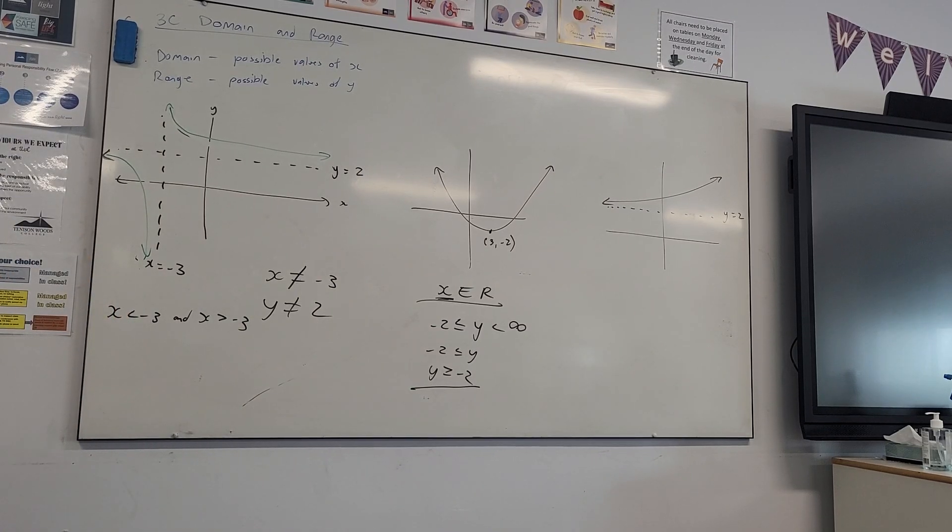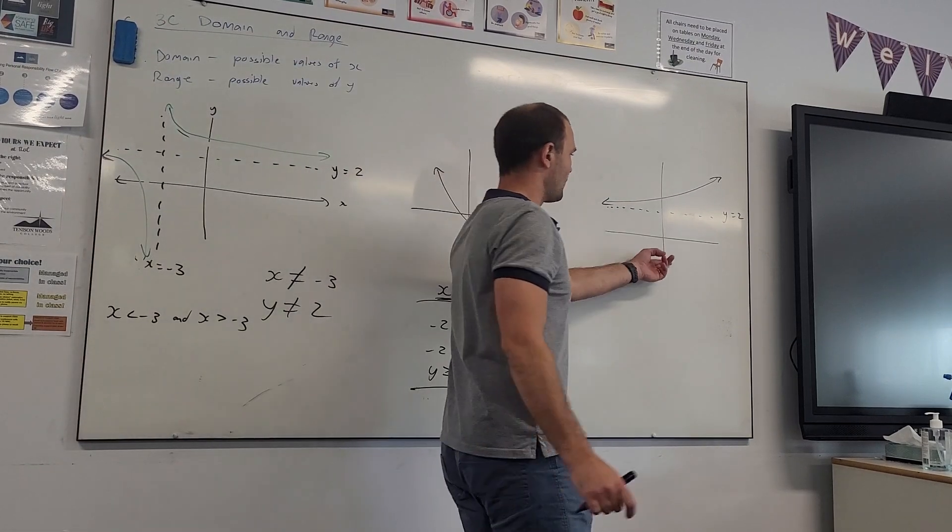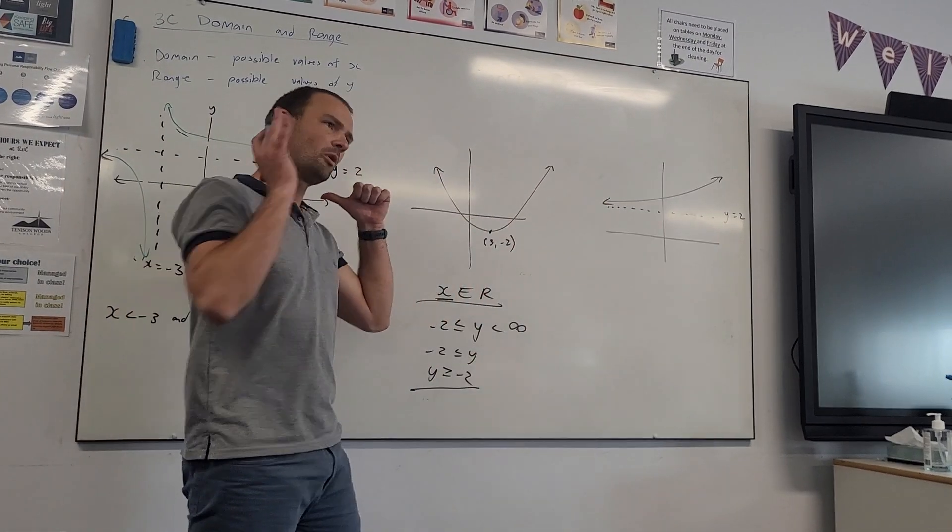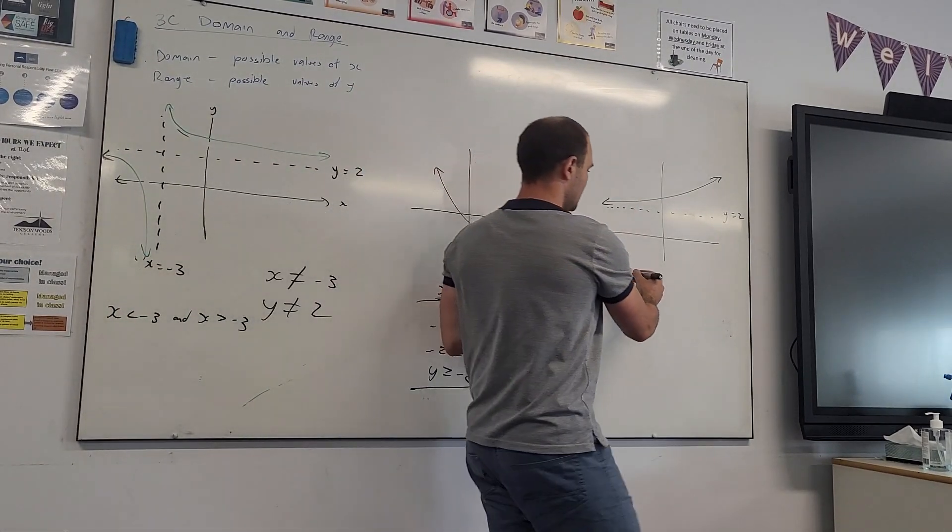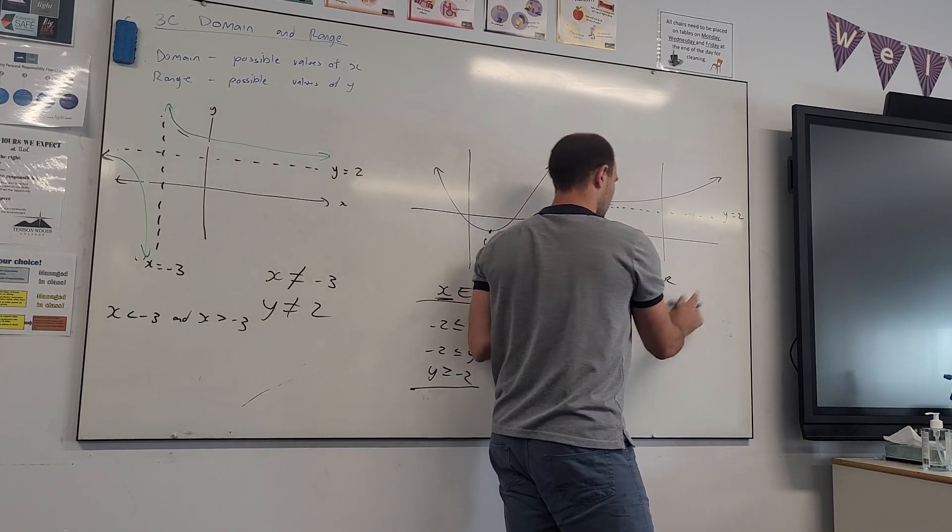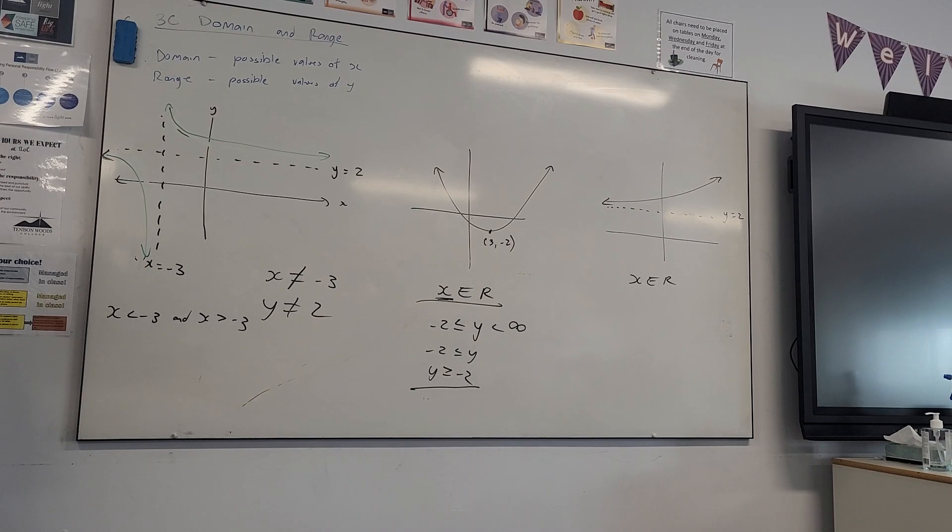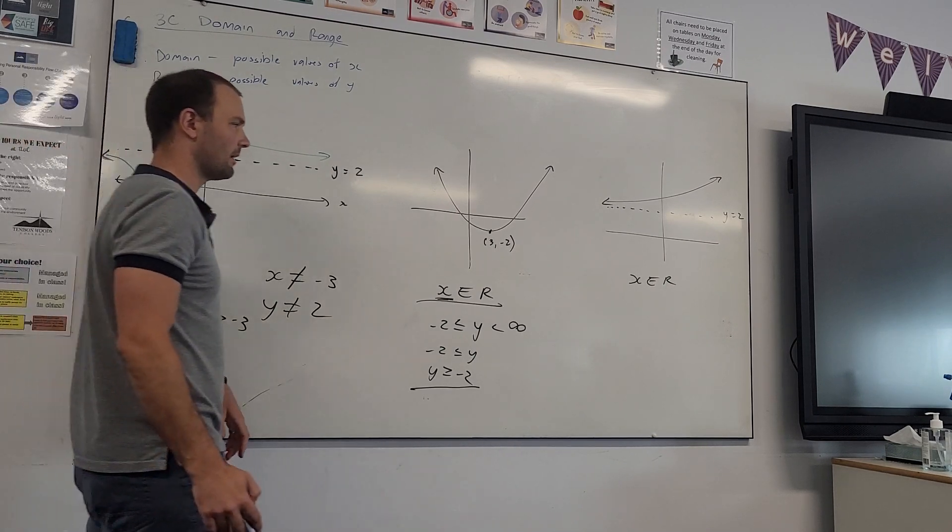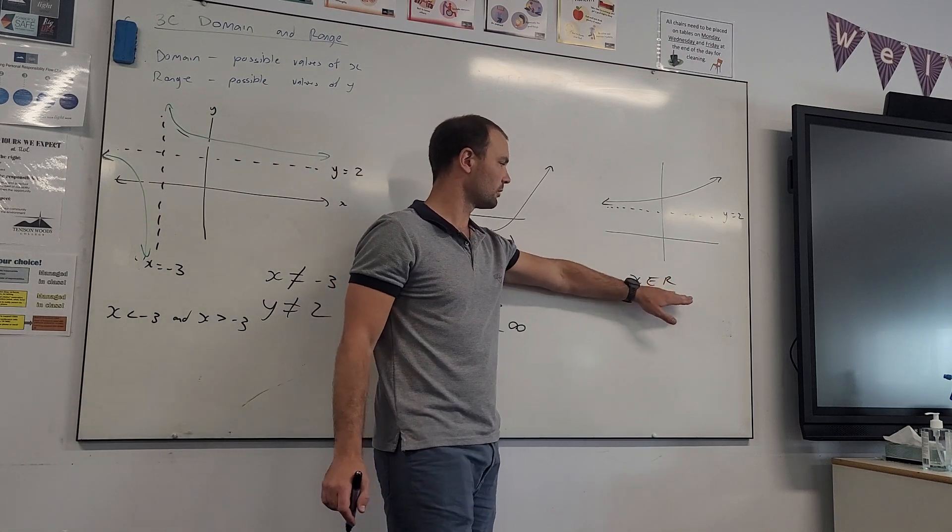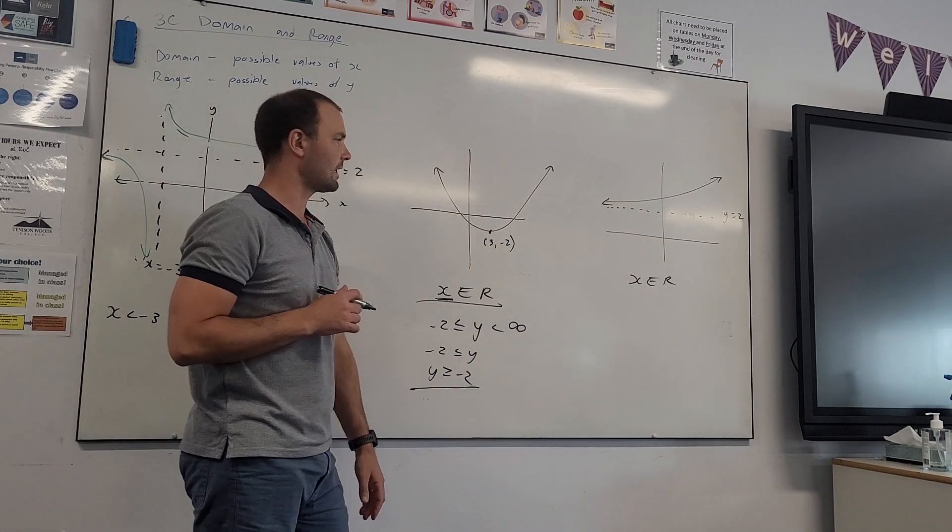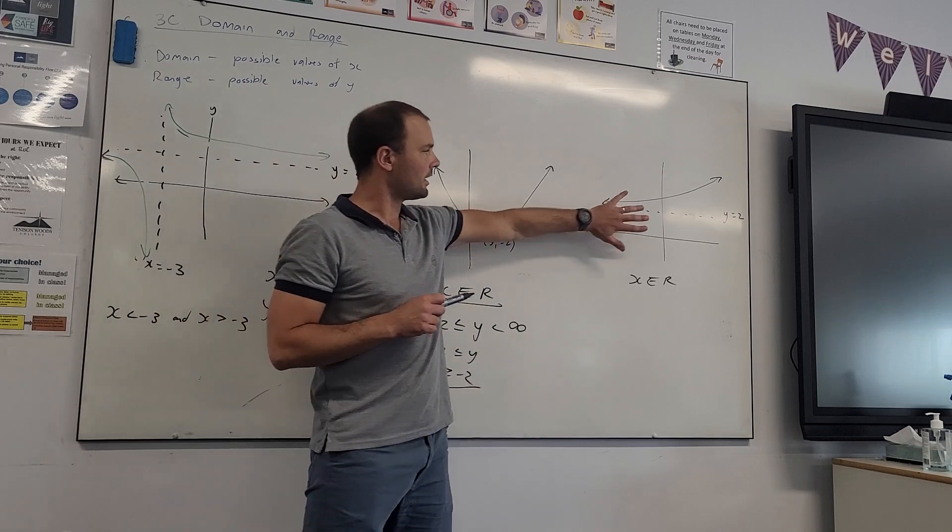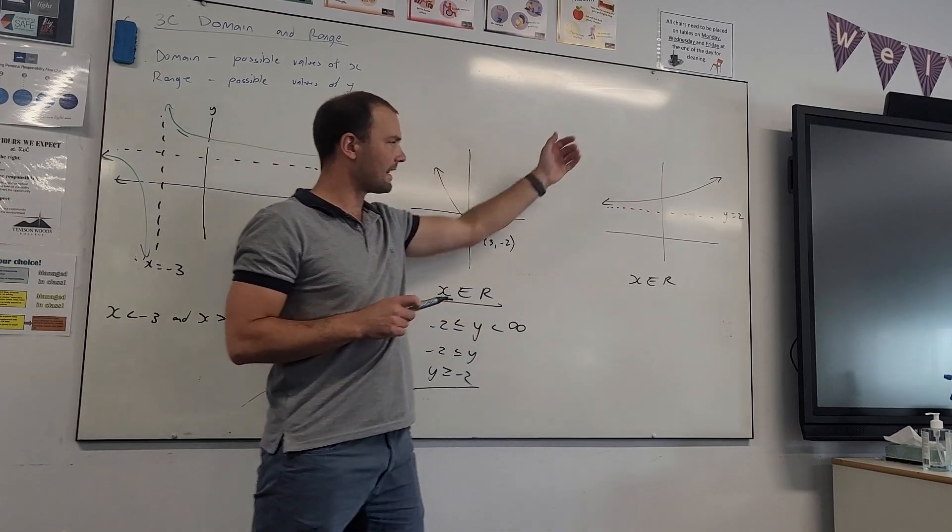Alright, on to the last one. We can see arrows pointing to the left, pointing to the right, the domain exists for all positive value, for all values of y. x epsilon r. It's interesting, we say real values. Why would we say real values? Because if you're going to do specialist maths, you'll learn about imaginary values, imaginary numbers. So real numbers, all ones that exist on the Cartesian plane. Okay, so that's our domain, let's talk about our range.